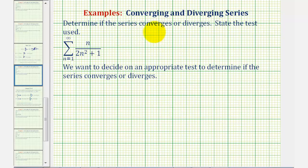We want to determine if the given series converges or diverges. If we take a look at our infinite series, notice that a sub n is n divided by the quantity two n squared plus one.